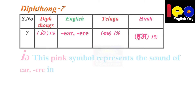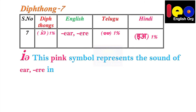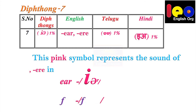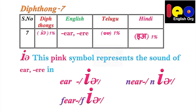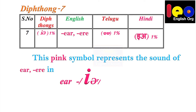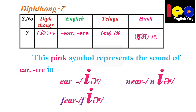Diphthong 7. Below this table you can see I as E and reverse E as O. The combination sounds 'ɪə'. This symbol represents the sound of EAR in 'ear', EAR in 'near', ERE in 'here'. Say: 'ɪə', 'ear', 'near', 'here'.